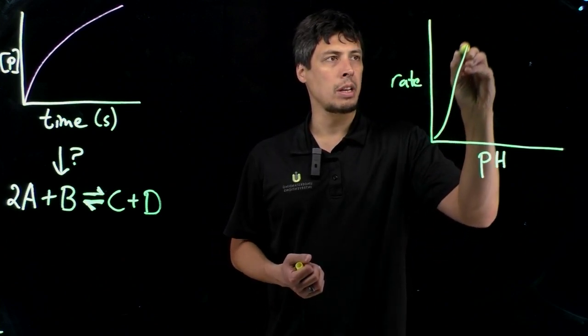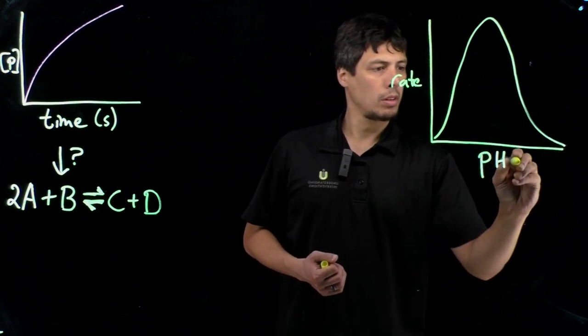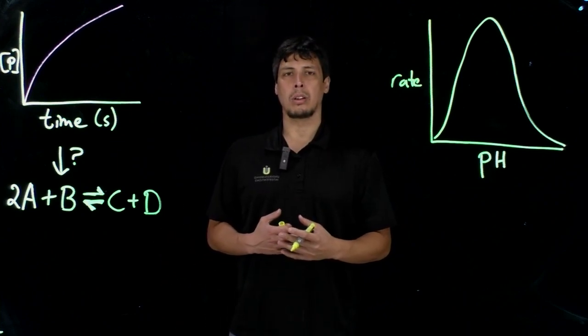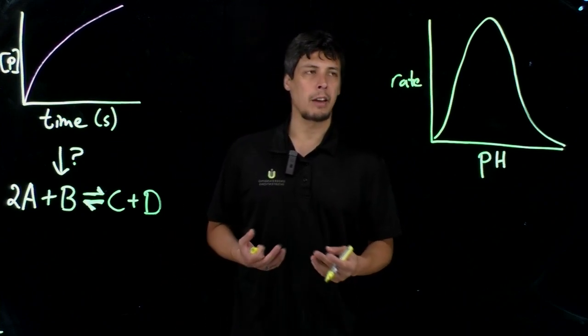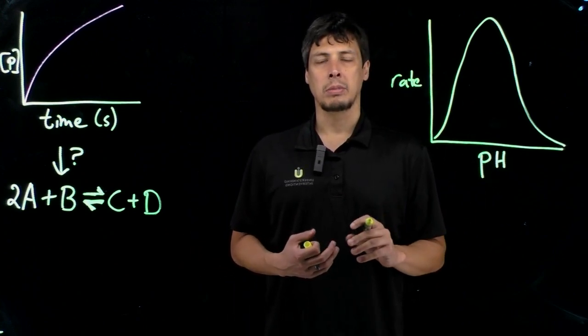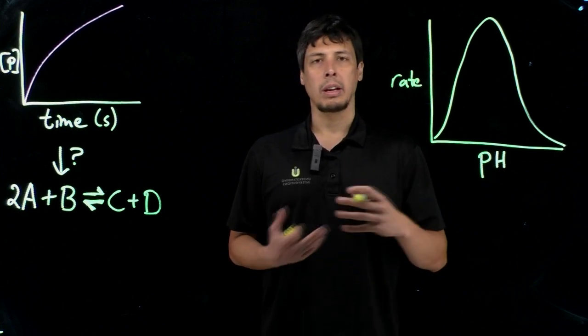These have pH optimums that then tail off at higher pHs. There are various reasons for that. One, if certain amino acids that are protonatable have pKa's in a certain pH range, we might expect that that protonation to be really important for the activity of the enzyme.